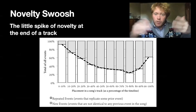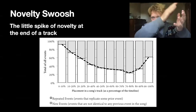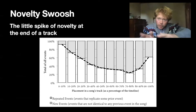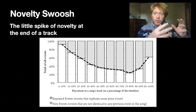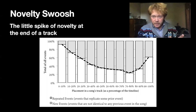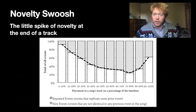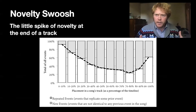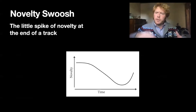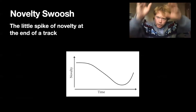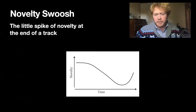As the song progresses, you're going to have more and more repetition, which is why you get this downward slope in the chart of novel or new events within a piece. But as described in the main video, the last 20% of a track often introduces some new kind of sound — some texture you haven't heard before — so you get this swoosh of novelty right at the end after a decline through most of the piece.